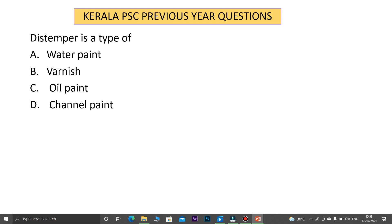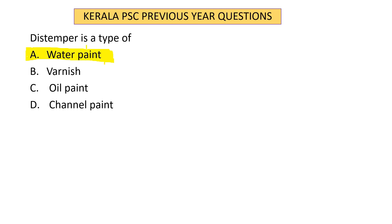Question 12: Distemper is a type of — option A water paint, option B varnish, option C oil paint, option D enamel paint. Distemper is a type of water paint, as it is mixed with water. It is an early form of white water-based paint.